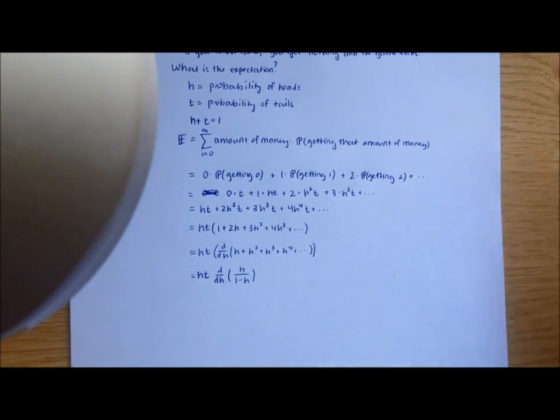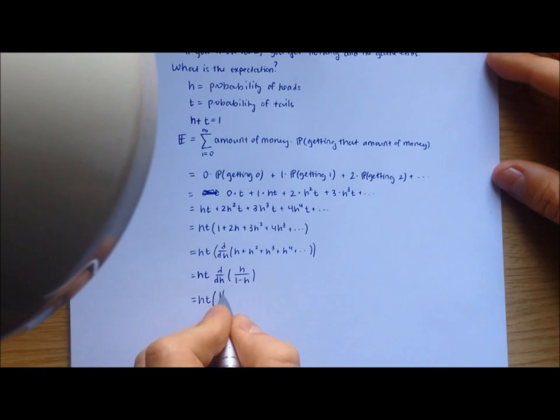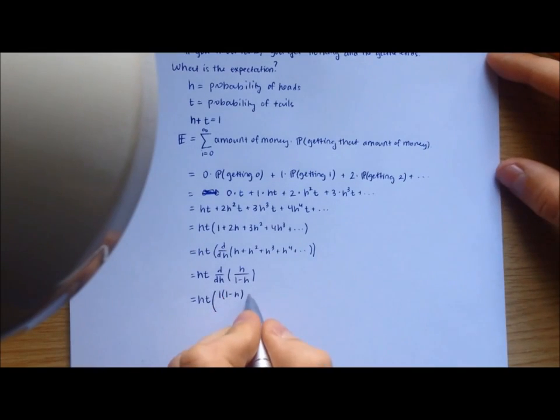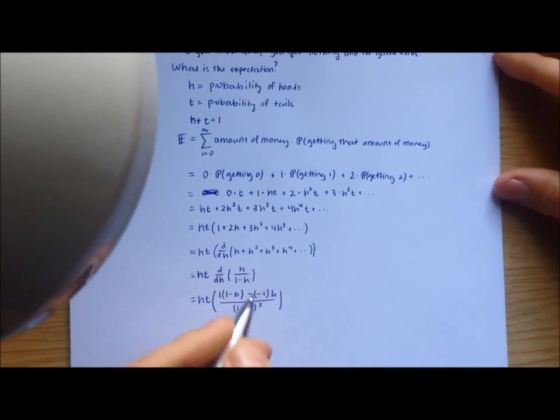But now we're almost done. We can just use the quotient rule on this to differentiate. So we take the derivative of h with respect to h, which is just 1, times 1 minus h, minus the derivative of this with respect to h, which is just minus 1, so minus minus 1 times h over all this, and we square the denominator. And this is just the quotient rule.